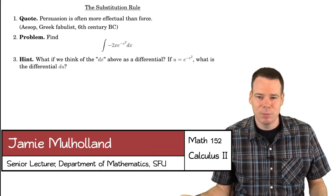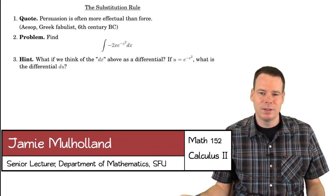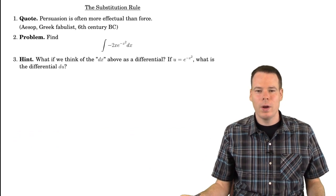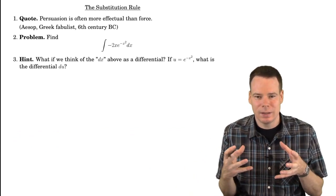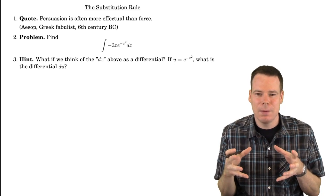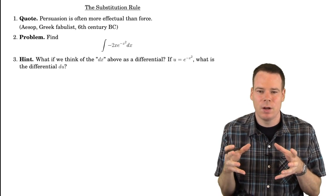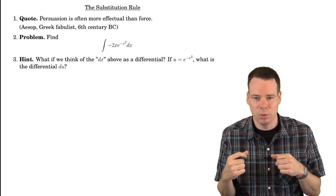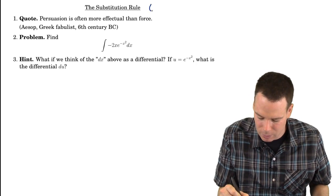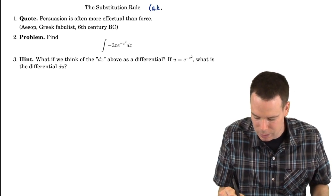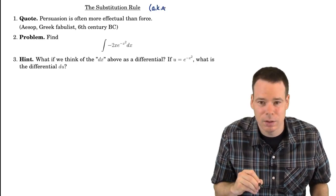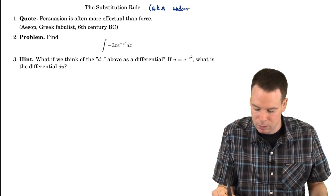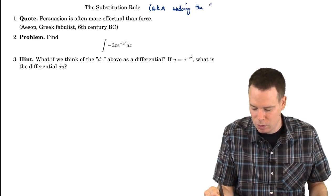In this lecture, we're going to look at the substitution rule. This is a technique for computing antiderivatives, where the integrand looks like it came from the derivative of a composition through the use of the chain rule. In some sense, this is really about undoing the chain rule.